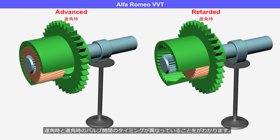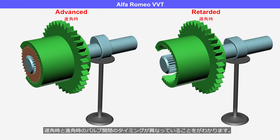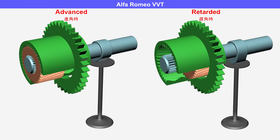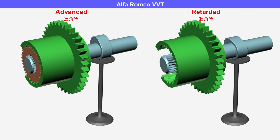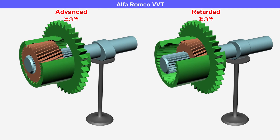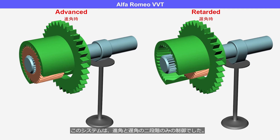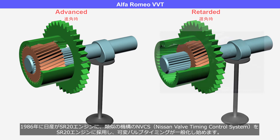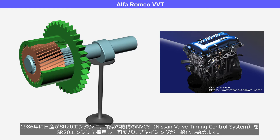You can observe that the timing of valve opening and closing is different during the retard and advance phases. This system only switched between two stages: advance and retard. In 1986, Nissan adopted the NVCS, Nissan Valve Timing Control System, for the SR20 engine — a similar mechanism to Alfa Romeo's — marking the beginning of the generalization of the variable valve timing system.